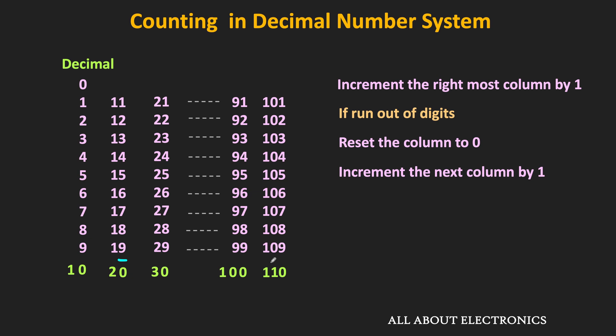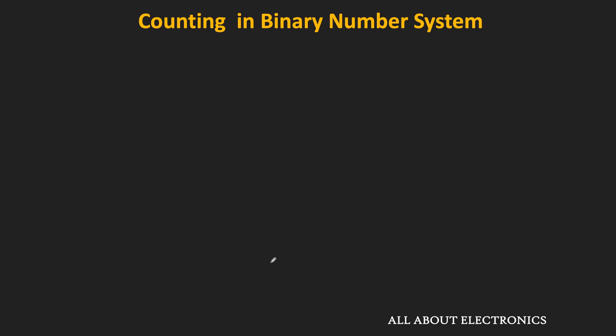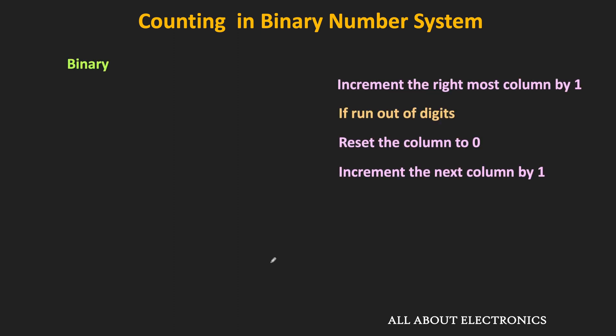The same rule is also applicable for counting in the binary number system. In the binary number system, we will start with the smallest number and start incrementing by 1. But since there are only two digits, we immediately run out of digits. So once we run out of digits, we reset that column to 0 and increment the next column by 1. Therefore the next number is 10.